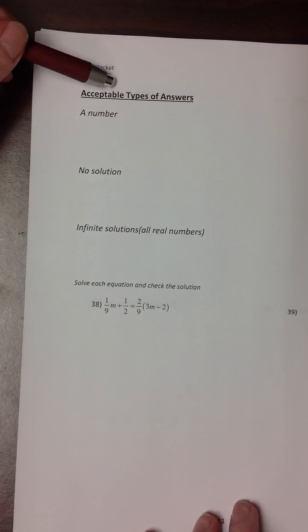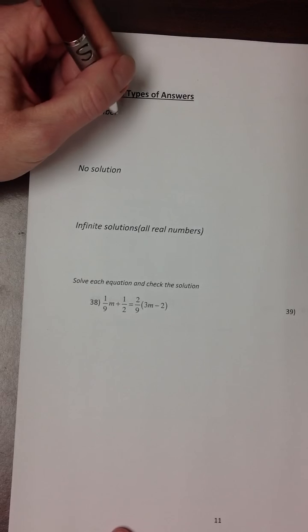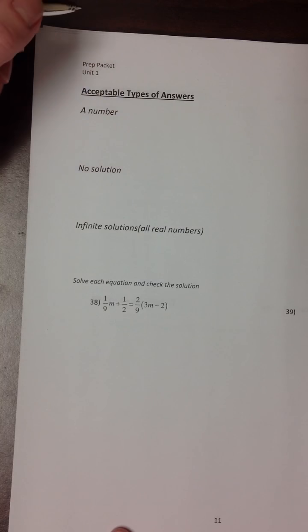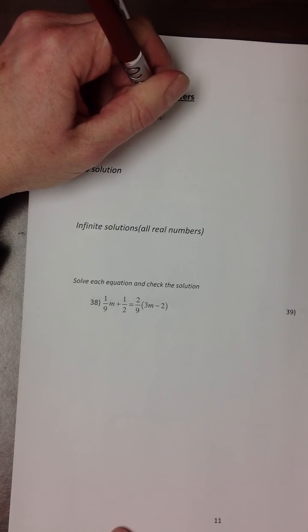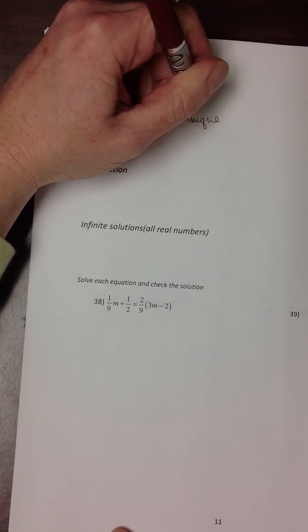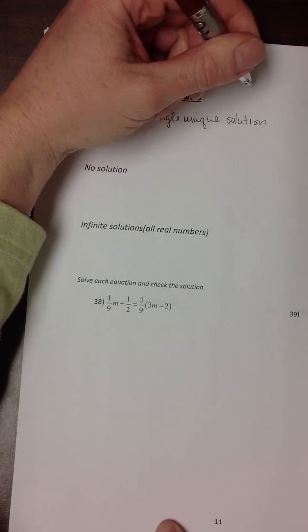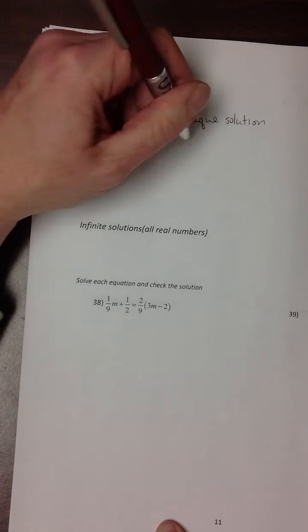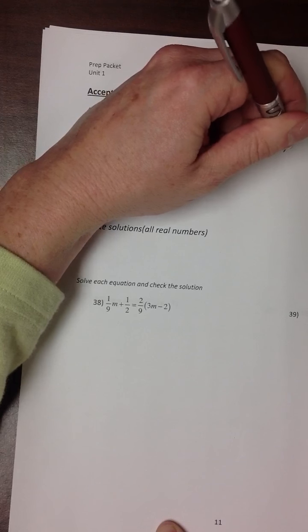An answer that is just a single number is the type we've been getting so far. All the problems we've worked have resulted in our variable on one side and a single number on the other side. We call those unique solutions. Sometimes an equation has a single unique solution where the answer is a single number, like x equals 7, or x equals negative 2, or x equals 3 elevenths.